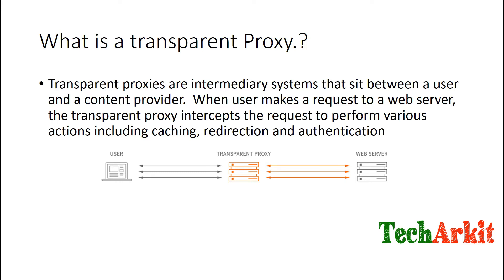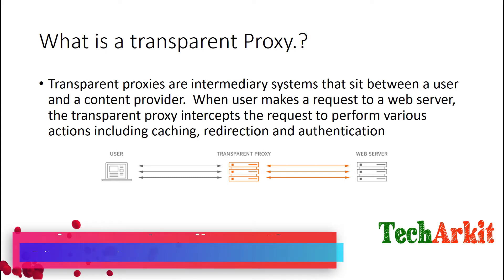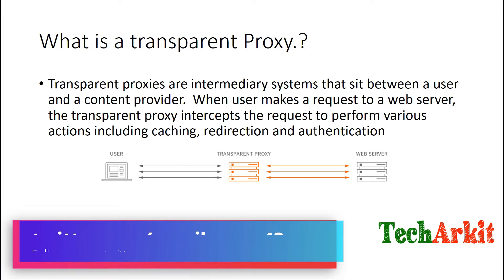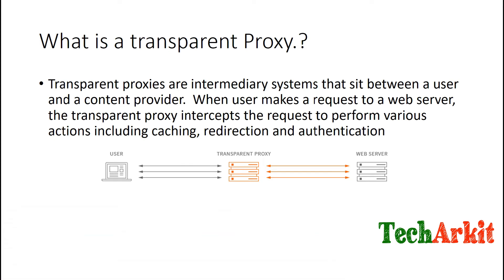These transparent proxies can also have caching, redirection, and authentication — all these modifications of the request from the users to the web server. The web server knows where the traffic is coming from — whether it is coming from the user directly or through the proxy. When a user makes a request to the web server, the transparent proxy intercepts the request to perform various actions including caching, redirections, and authentications.